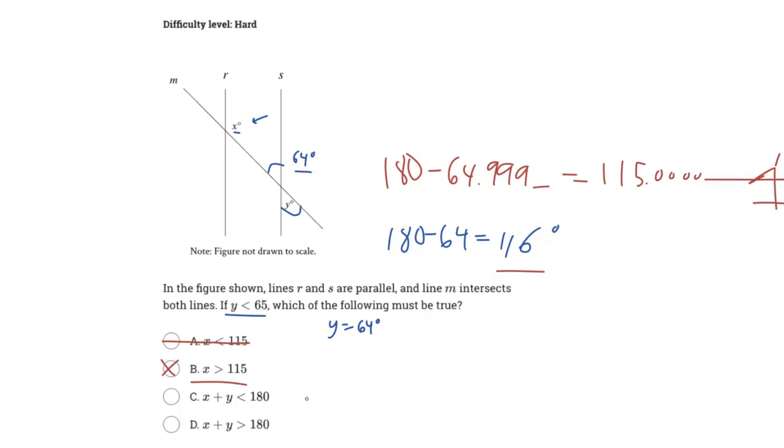So it says X plus Y has to be less than 180 degrees and X plus Y has to be greater than 180 degrees. Well, we just proved it here, right? We said that if Y, we could just name it 64 degrees. Vertical angles, this is 64 degrees. We find that X would have to be 116 degrees. 116 plus 64 is 180 degrees. And so neither C or D is correct because X plus Y will always be equivalent to 180 degrees.